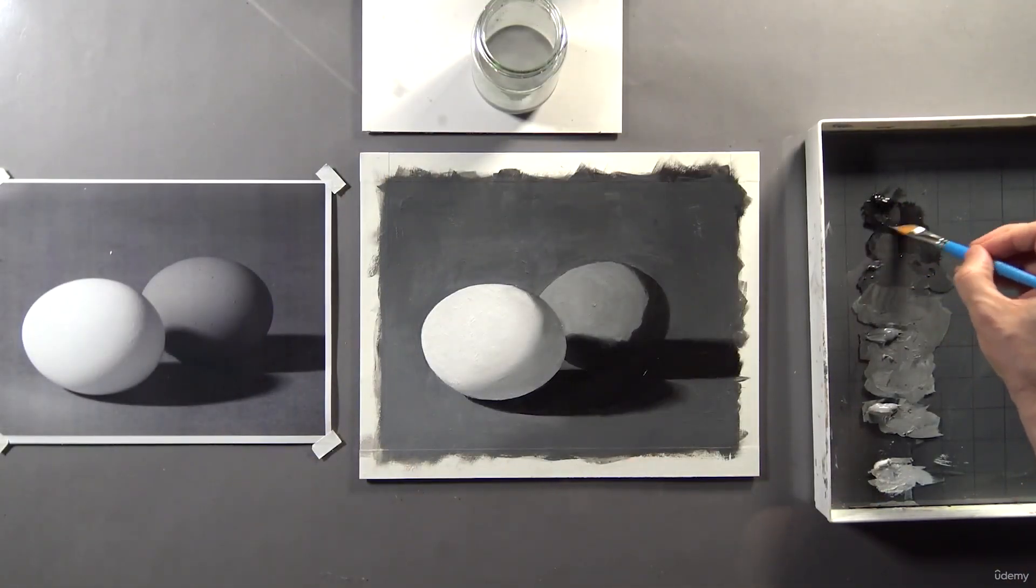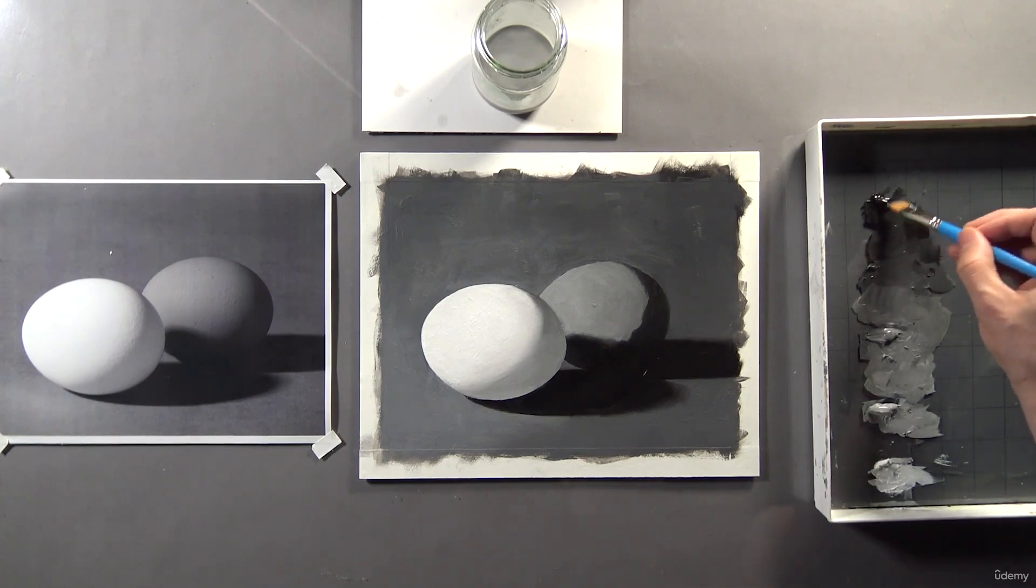Okay, I'll move to the shadow next. Remember, this isn't black. It's somewhere between fourth and fifth value.